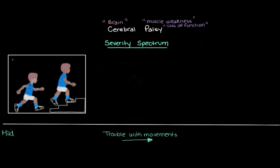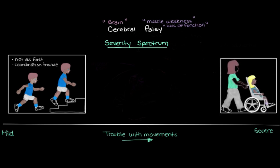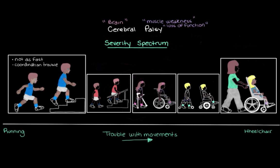He'll still have some movement problems — maybe he can't run quite as fast as someone without cerebral palsy, or maybe he has some trouble with coordination, like running and throwing a ball at the same time. But overall he's able to function pretty well. On the severe end of the spectrum, the picture looks quite different. This girl also has cerebral palsy but needs to be in a wheelchair, has trouble with her posture, and needs someone to operate her chair for her. So the severity spectrum for cerebral palsy goes from running to wheelchair, and everything in between.